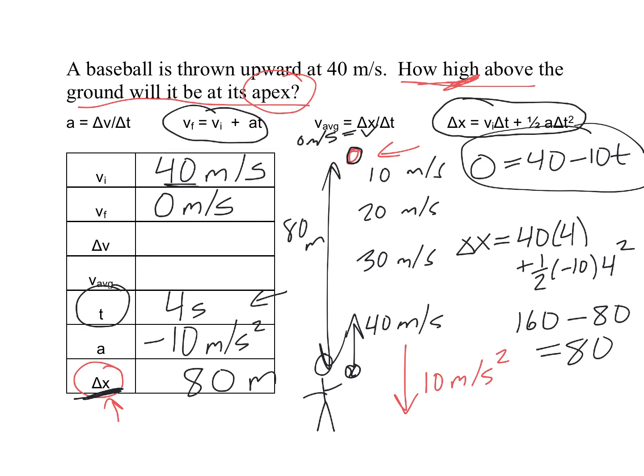If we want to check our work, we can also say what is the average velocity. If you start at 40 and finish at zero, the average of that is 20 meters per second. And if you imagine going 20 for four seconds, you can see how you would get 80. So that's another way to double check your work.